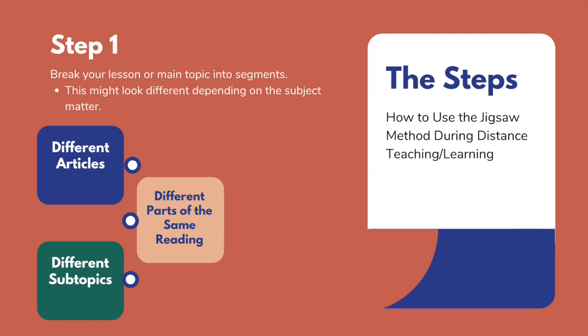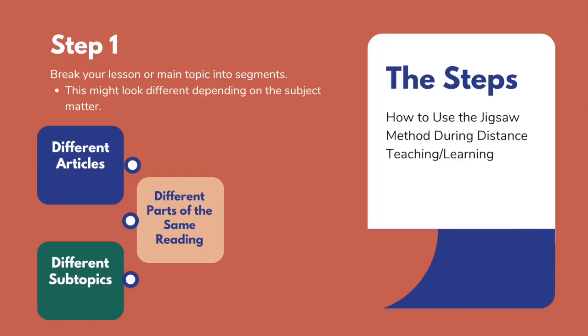This will look different depending on the subject. You could do this by either providing students with different articles to read about the same topic, which is what I usually do, or you could have one piece of reading broken down into sections and distributed to the students. You could also have students research or read about different subtopics within a main topic.